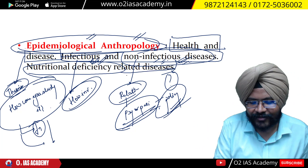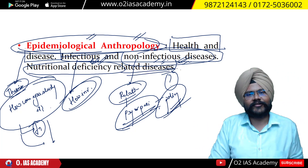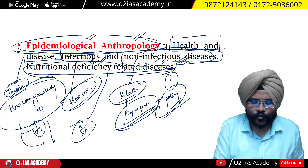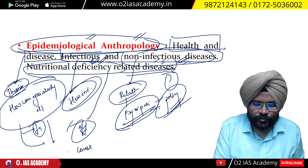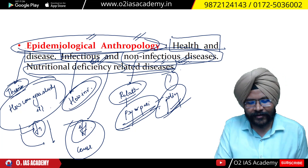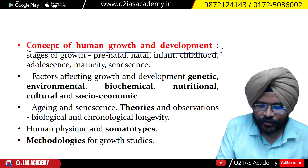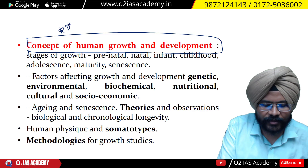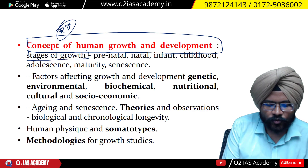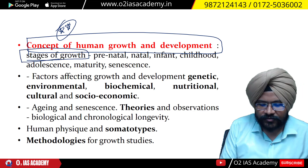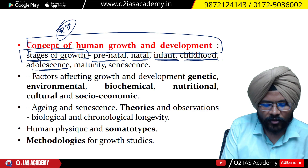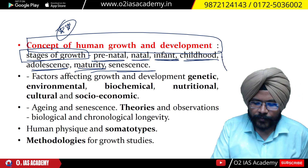Then you have nutritional deficiency related diseases — what is the incidence in India, the effect on human population, and the causes. These three things are studied under nutritional deficiency related diseases. Then comes the concept of human growth, where stages of growth are examined: pre-natal growth, natal growth, infant, childhood, adolescence, maturity, and senescence.